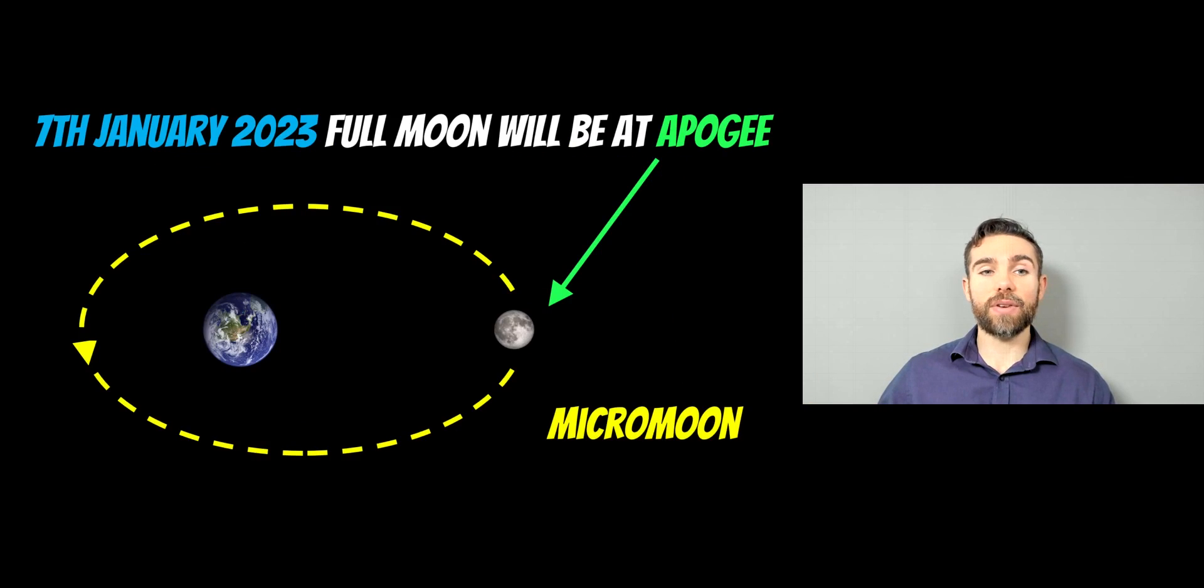Now, on the 7th of January 2023, the full moon is going to occur when it's at its furthest away point on its orbit from Earth. And this will be a micromoon. So on the 7th of January 2023, the full moon is going to appear quite small because it's actually the furthest away location to Earth that it can have.